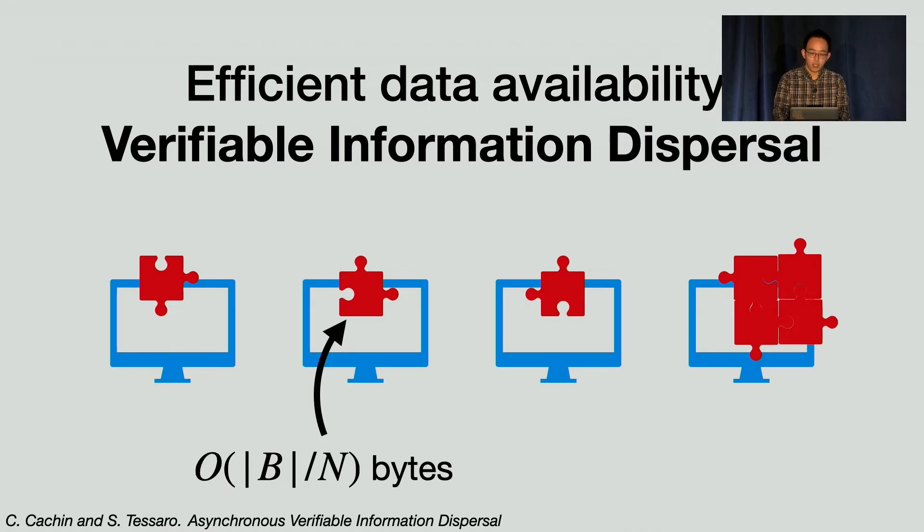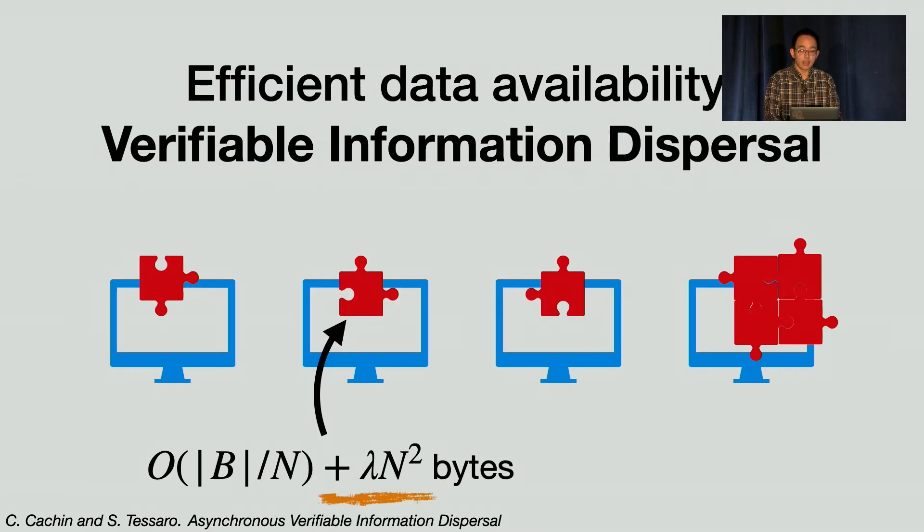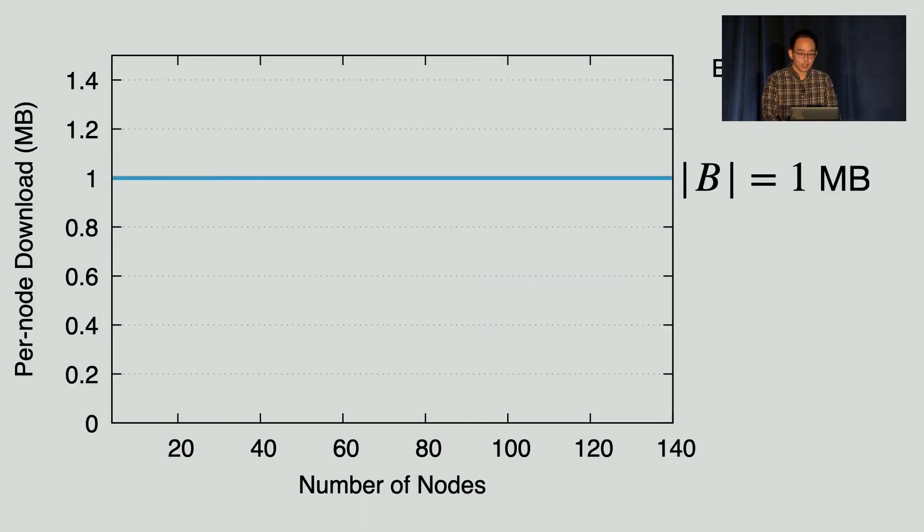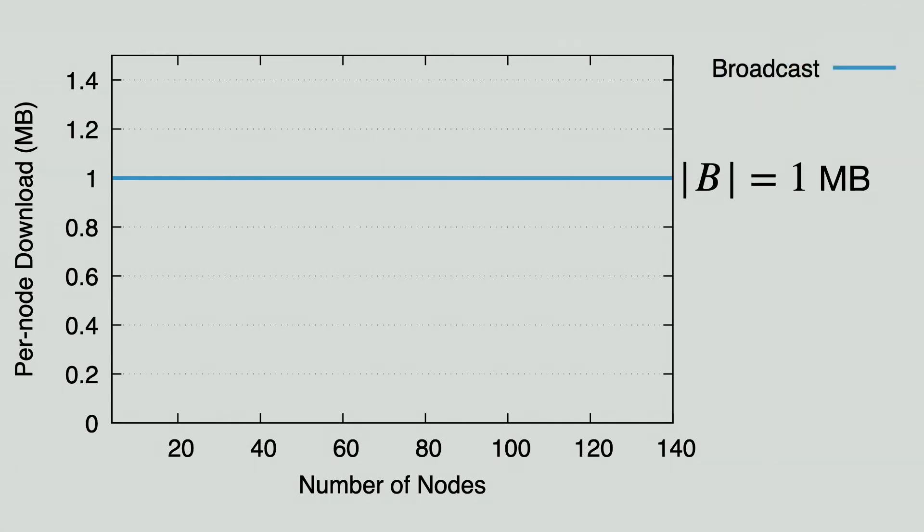It turns out that there's a primitive called verifiable information dispersal, or VID in short, in the distributed computing community that implements this idea. But before we borrow the protocol, we notice that the state-of-the-art VID protocol actually has an extra per node cost of order N squared. The cost is for nodes to make sure the encoding itself was done correctly. This extra cost actually turns out to be problematic for us. Here we fix the block size to one megabyte and plot the amount of data that each node needs to download under different schemes.